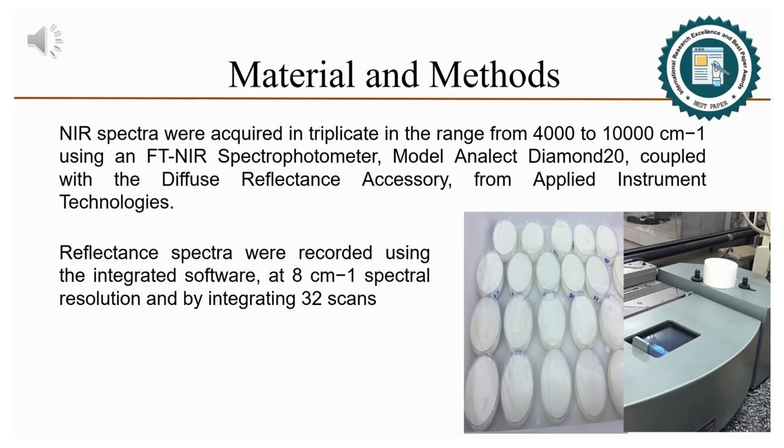NIR spectra were acquired in triplicate in the range from 4,000 to 10,000 centimeters per one using FT-NIR spectrophotometer model ANALECT Diamond 20 Cooper with the diffuse reflectance accessory from Applied Instrument Technologies. Reflectance spectra were recorded using the integrated software at 8 centimeters per one spectral resolution and by integrating 32 scans.